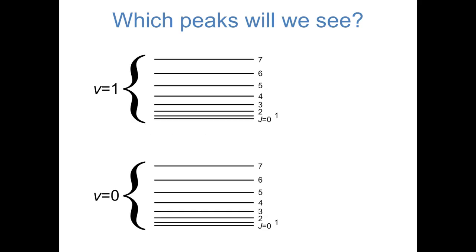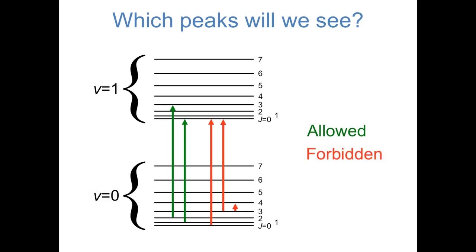To remind ourselves of these selection rules, let's take a quick look at a few examples of peaks that we will see in the spectrum and peaks that we will not see. We will see peaks in which V equals 0 is excited to V equals 1 and J is either increasing or decreasing by 1. But we won't see peaks in which J is not changing, or V is not changing, or J is increasing or decreasing by more than 1.